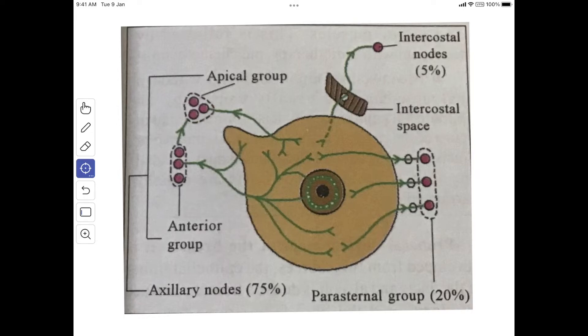About 20% of the parenchyma lymphatics accompany the perforating branches of the internal thoracic artery and drain into the parasternal or internal mammary nodes. They receive lymphatics from the medial and lateral parts of the mammary gland.